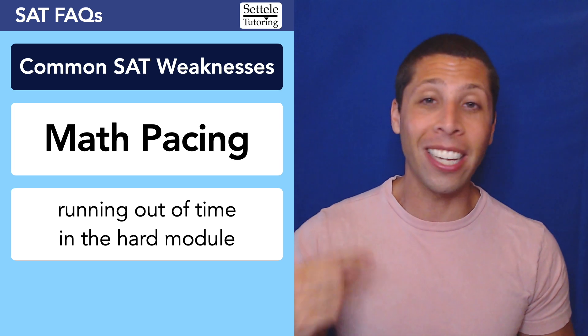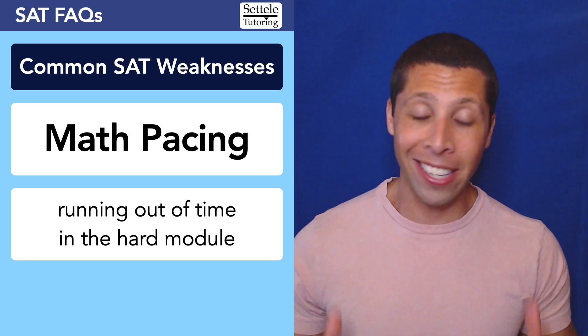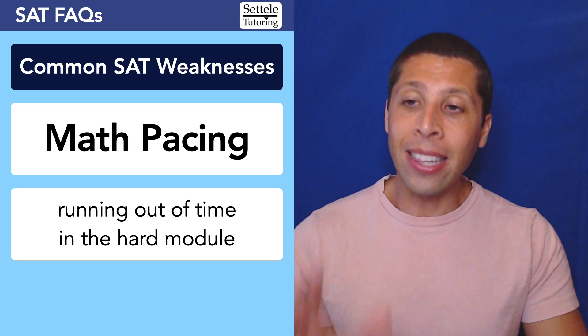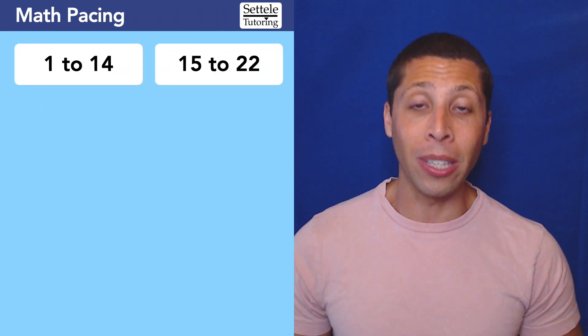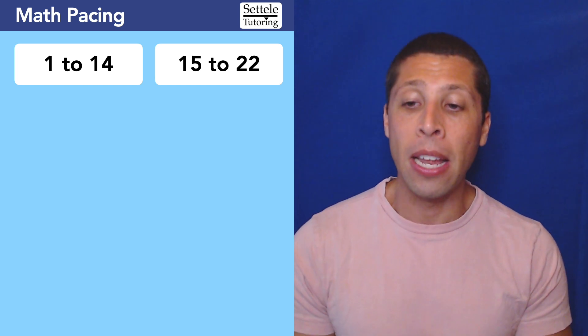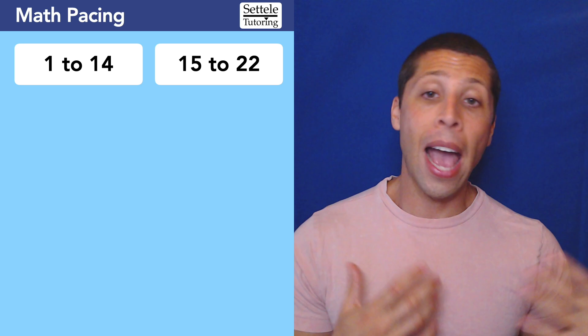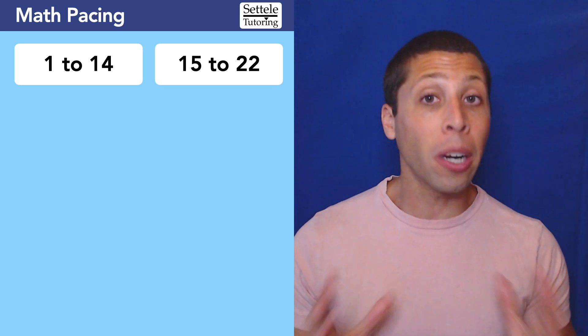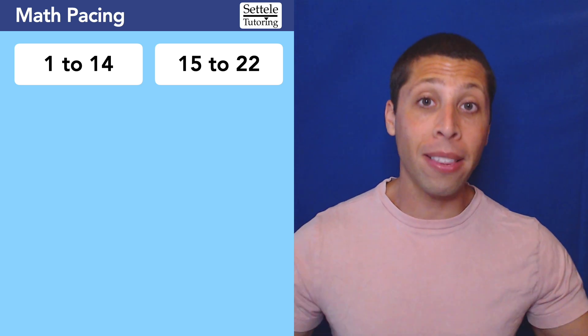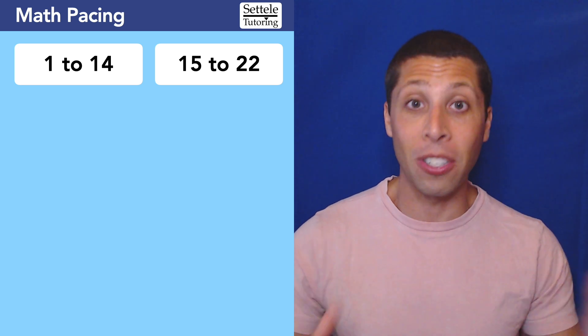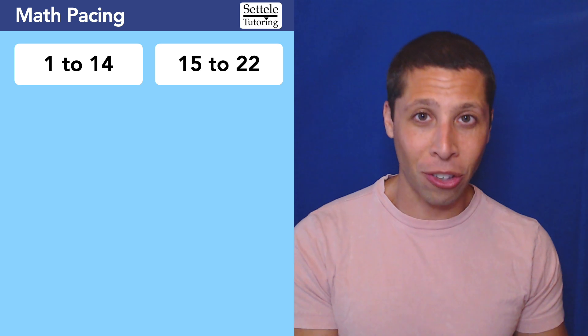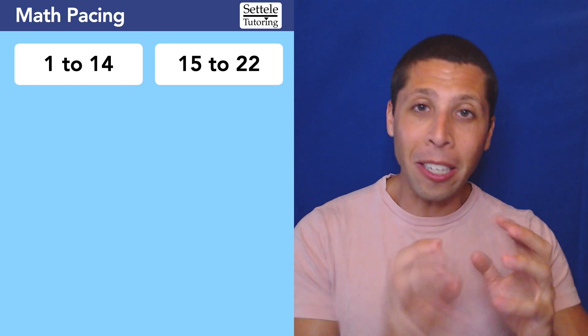Then the second module, of course, is going to get harder. It's a higher density of difficult questions, more time-consuming questions, so we're going to need to pick up the pace. Let's divide the hard module into two different parts: questions 1 through 14 and questions 15 to 22, and we're going to approach those types of questions differently. Remember that the overall math sections on the SAT are organized by difficulty, meaning the first question is usually the easiest and the last question is usually the hardest, though it's a little scattered in between.